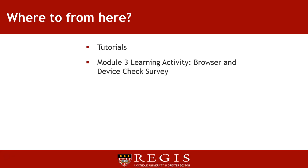Module 3 Learning Activity — Browser and Device Check Survey: This module's learning activity is a survey tool. Some courses may have you take surveys to determine consensus, solicit feedback, or provide input to the instructor. For this survey, we would like you to inform us what browser, what version, and what operating system you are using. If you are unsure how to discover these answers, you can visit whatsmybrowser.org. Thank you very much for watching, and see you in the next video.